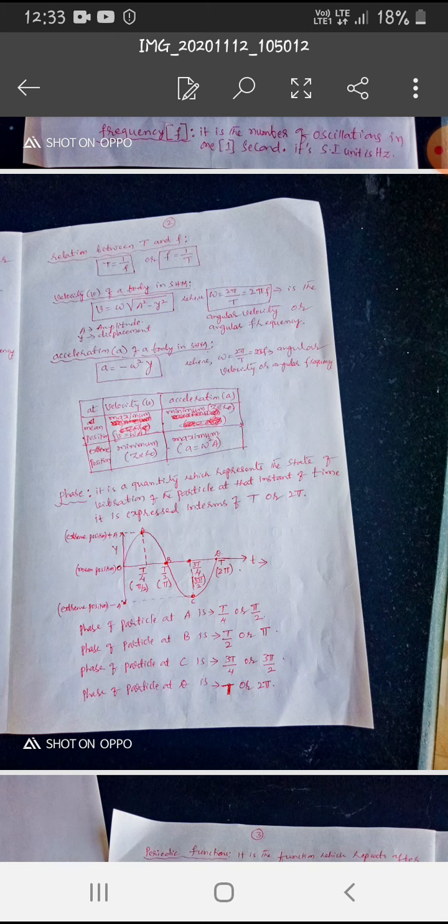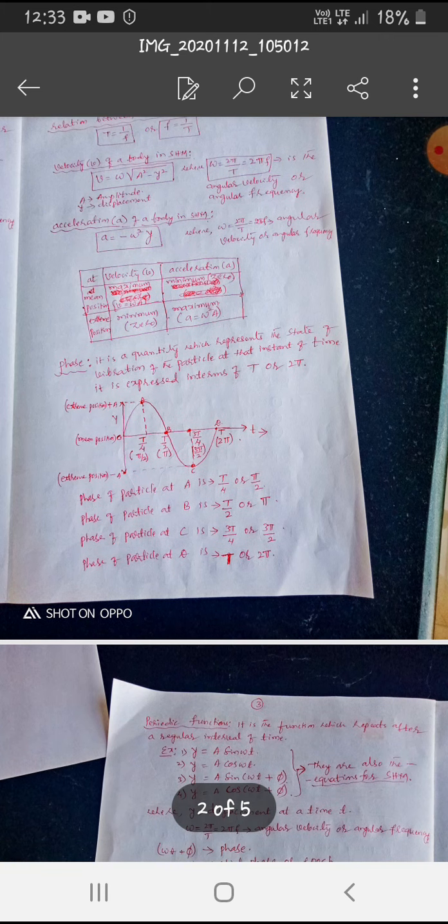And here, acceleration. A is equal to minus Y square by Y whole cube by Y, W minus W whole cube by Y is the acceleration of a body in SHM.